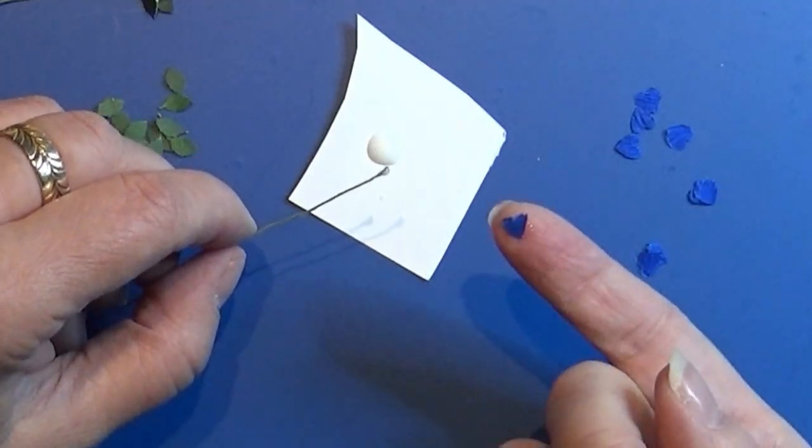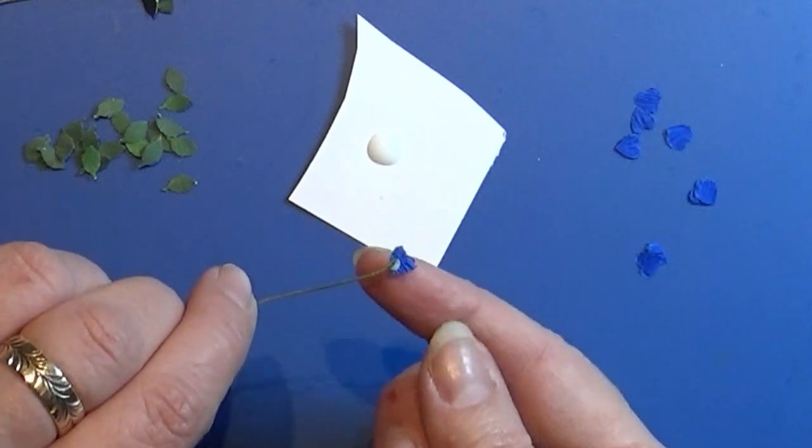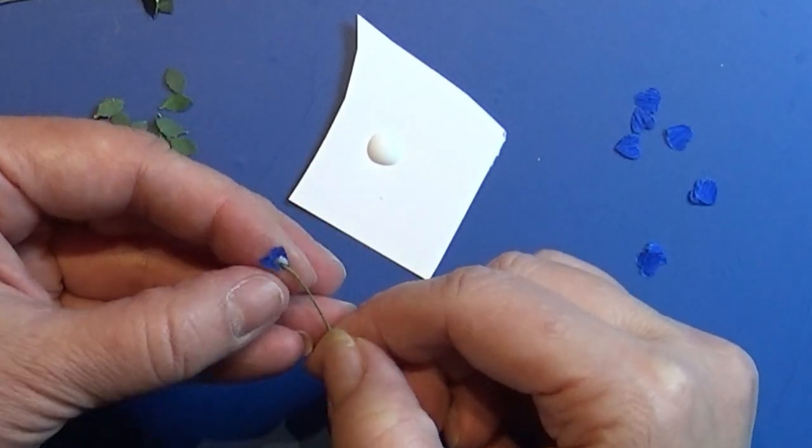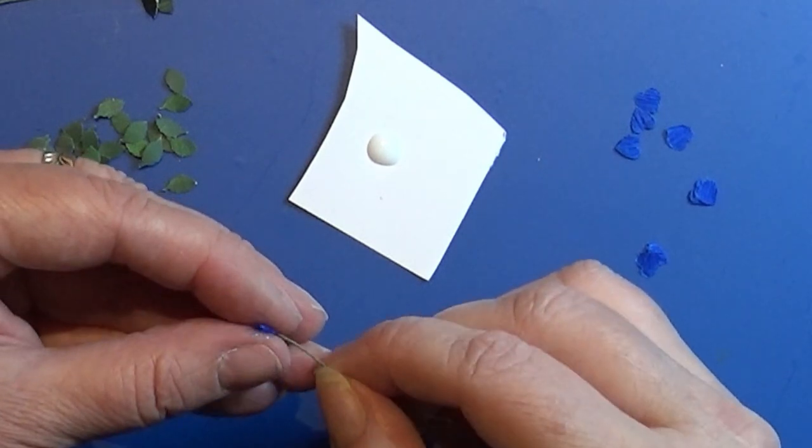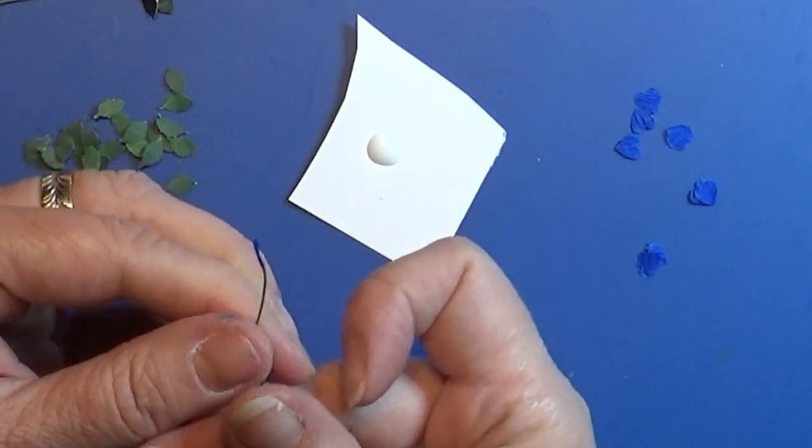I take another thin green flower wire and I dip the tip of it in this paper glue. Take one of the hearts and wrap it around the tip of it.